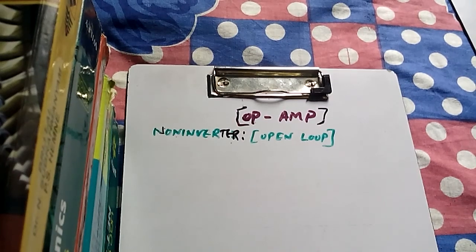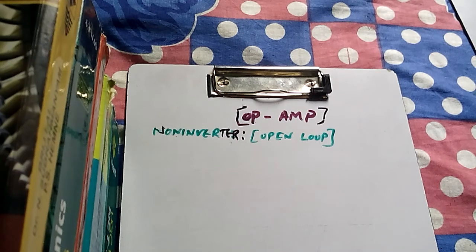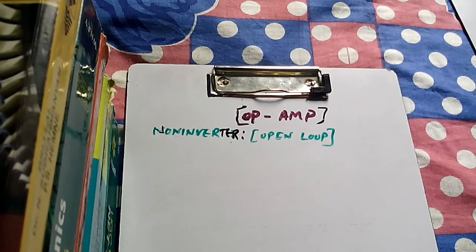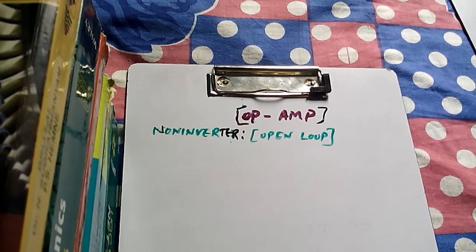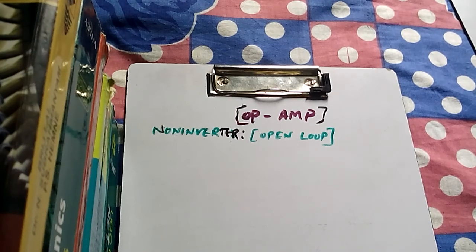Hey friends, this is Vidhan, welcome to my channel. Today we will discuss the operational amplifier. In our last video we discussed the inverter for both open loop and with feedback circuit. Today we will take the non-inverter circuit and discuss it for both open loop and with feedback, and we will see important points on how to take the voltages at the input terminals for both cases.